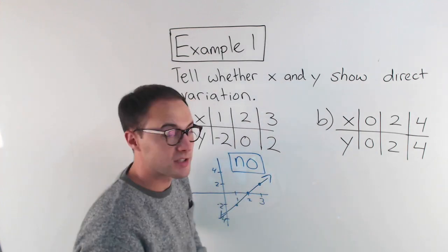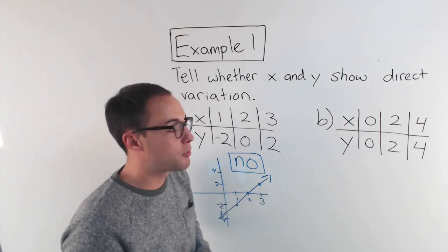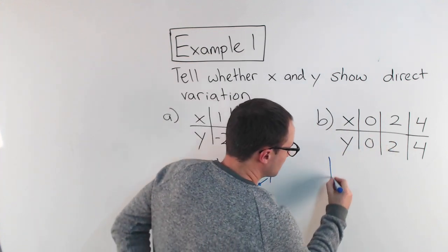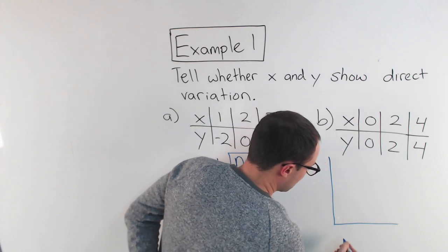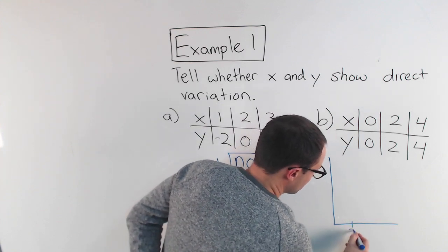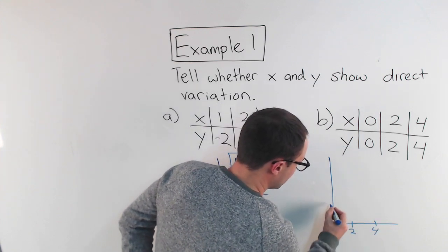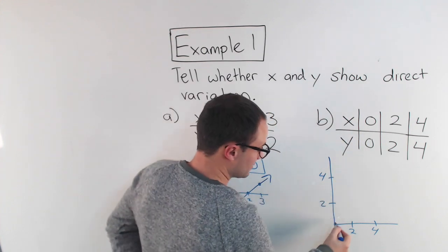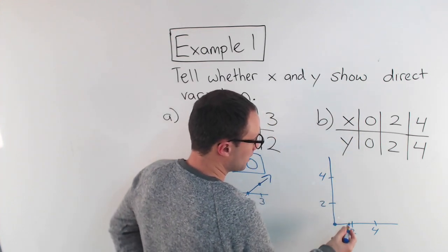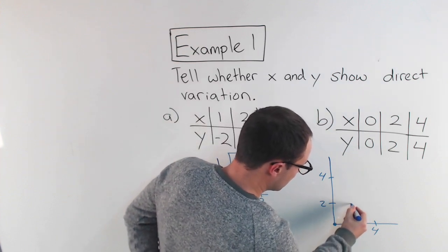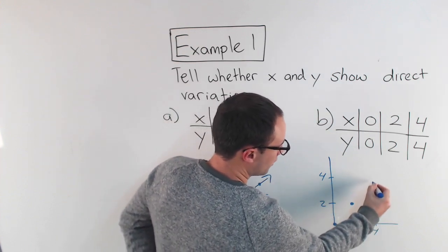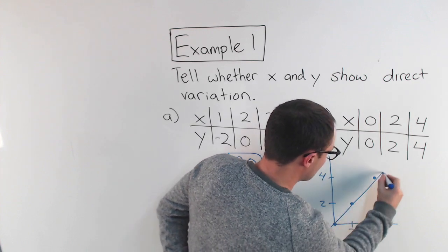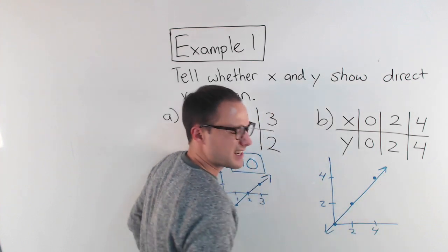Okay. Let's try b. So same thing. Let's graph the points. And for this, they're both positive, which is nice. So I'm just going to do the first quadrant. And that'll be, let's go 2, 4, 2, 4. First point is at the origin, 0, 0, right there. Then I've got 2, 2, which is there. 4, 4, which is up there. Draw my line. Doesn't have to be perfect.